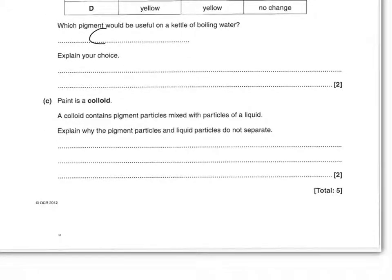Paint as a colloid: a colloid contains pigment particles mixed with particles of a liquid. Explain why the pigment particles and liquid particles do not separate — two marks. The first mark is saying that the pigment is dispersed throughout the mixture. The second mark is saying that particles are sufficiently small, or small enough, so they won't settle to the bottom — or you could say they're too small and therefore too light to settle to the bottom.